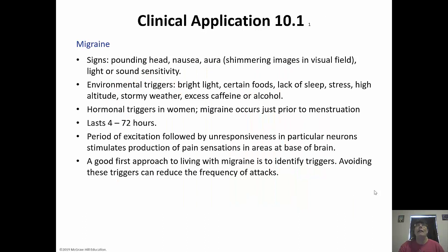Migraines are something a lot of people suffer from, including my youngest daughter. Signs that you're having a migraine: you'll have a pounding headache, feel nauseous, experience something called an aura where you have shimmering images in your visual field, and usually light sensitivity and possibly sound sensitivity. Environmentally, there are triggers — bright light, of course, but also certain foods, stress, caffeine, alcohol, lack of sleep, and even weather can impact whether you're going to have a migraine.